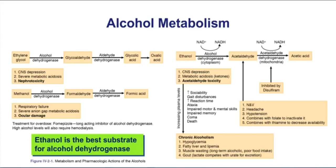There are also notes about chronic alcoholism. Chronic alcoholism can result in hypoglycemia. Fatty liver can occur as well. Muscle wasting and possible gout are all signs of chronic alcohol use.